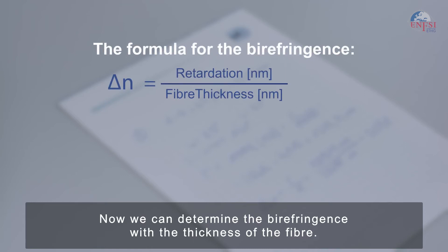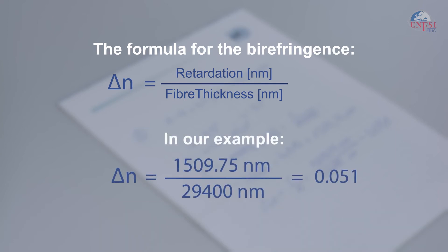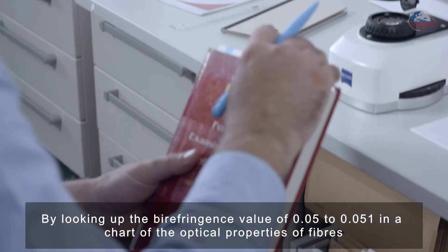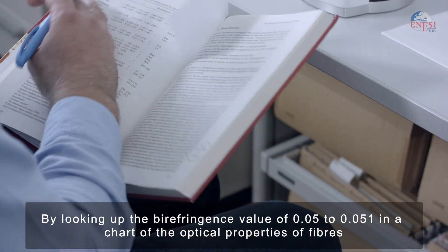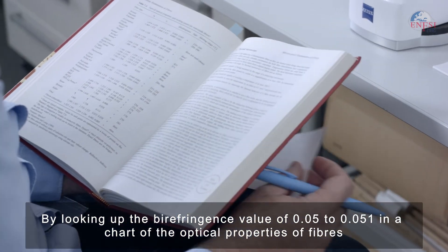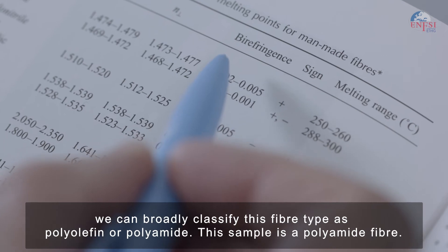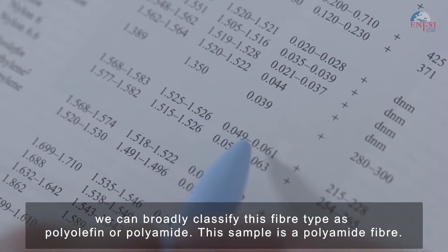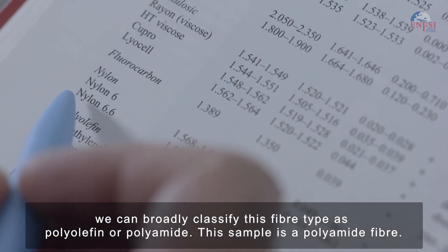The resulting retardation is 1,509.75 nanometers. Now we can determine the birefringence by dividing the retardation, 1,509.75 nanometers, by the thickness of the fiber, 29,400 nanometers. The resulting birefringence is 0.051. By looking up the birefringence value of 0.051 in a chart of the optical properties of fibers, we can broadly classify this fiber type as polyolefin or polyamide. This sample is a polyamide fiber.